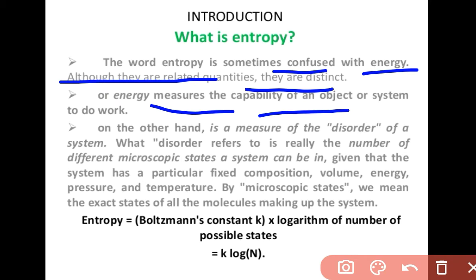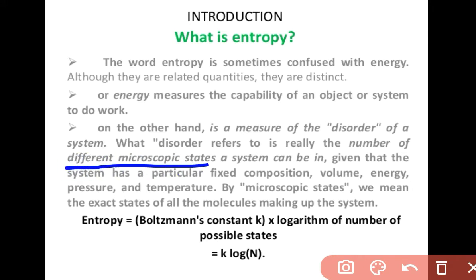Entropy, on the other hand, is a measure of the disorder of a system. What disorder refers to is really the number of different microscopic states a system can be in, given that the system has a particular fixed composition, volume, energy, pressure, and temperature. By microscopic states, we mean the exact state of all the molecules making up the system.